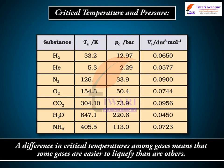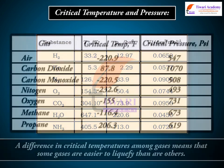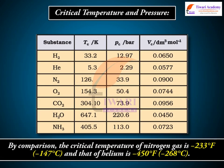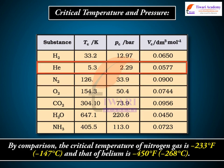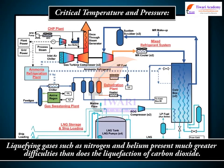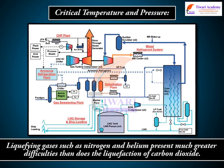A difference in critical temperatures among gases means that some gases are easier to liquefy than others. The critical temperature of carbon dioxide is high enough so that it can be liquefied relatively easily at or near room temperature. By comparison, the critical temperature of nitrogen gas is minus 233 degrees Fahrenheit (minus 147 degrees Celsius), and that of helium is minus 450 degrees Fahrenheit (minus 268 degrees Celsius). Liquefying gases such as nitrogen and helium present much greater difficulties than does the liquefaction of carbon dioxide.